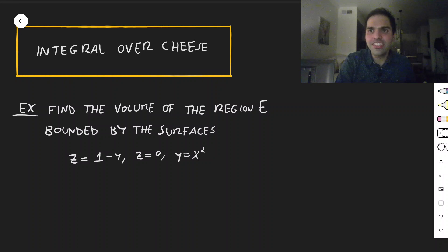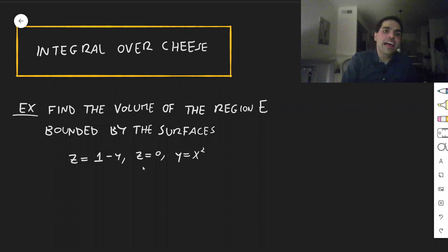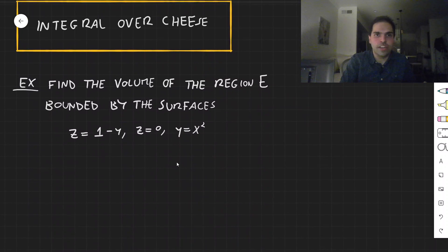Today we'll calculate the integral over chowda cheese. What I want to illustrate is how to calculate triple integrals. In particular, let's find the volume of the region bounded by the three surfaces: z equals 1 minus y, z equals 0, and y equals x squared.